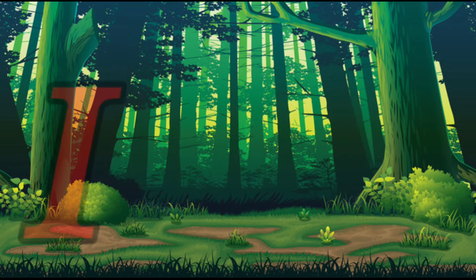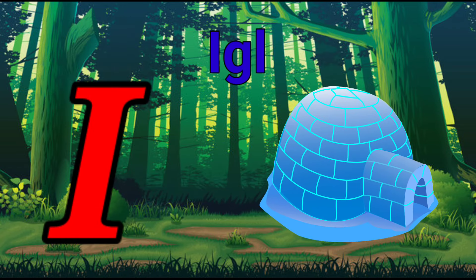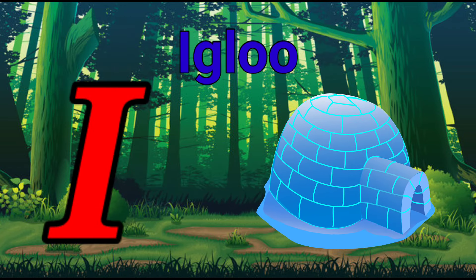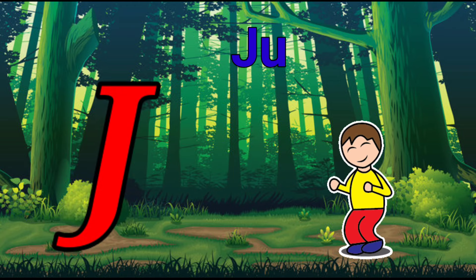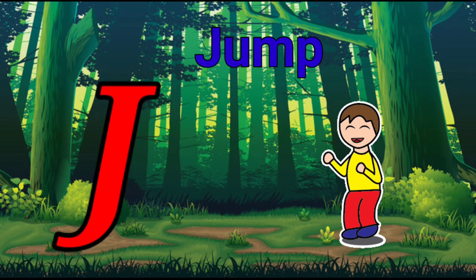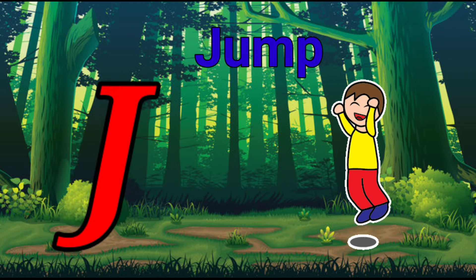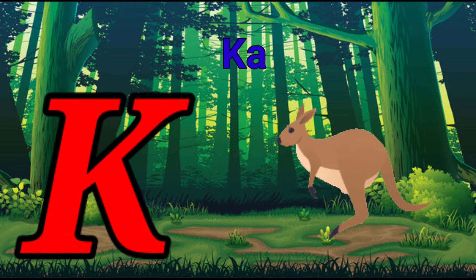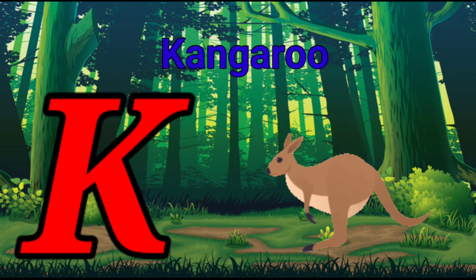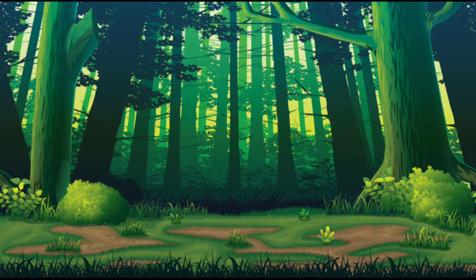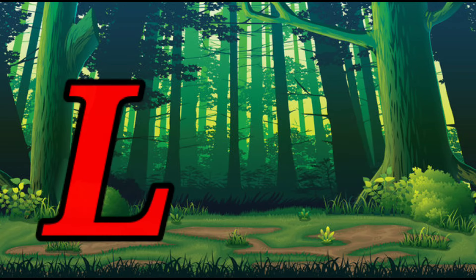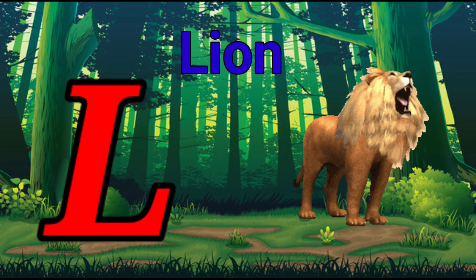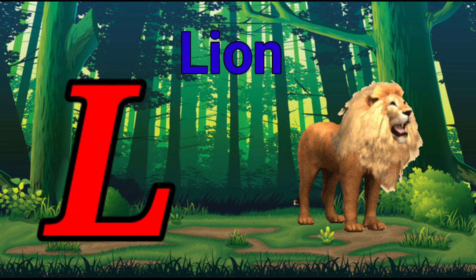I is for igloo, i-i-igloo. J is for jump, j-j-jump. K is for kangaroo, k-k-kangaroo. L is for lion, l-l-lion.